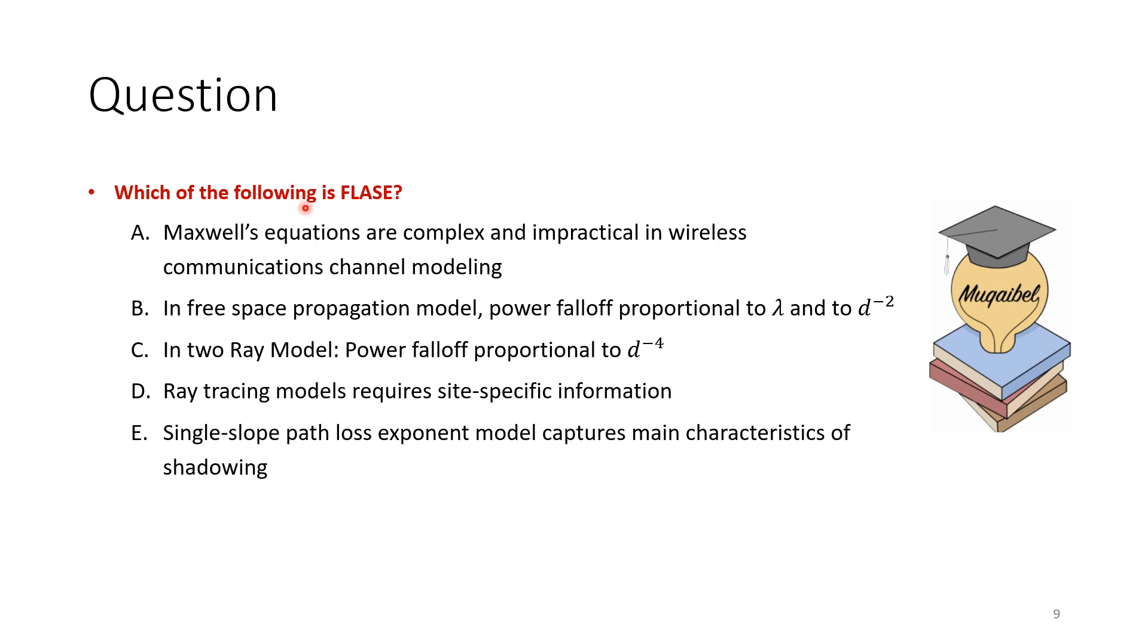Let's conclude with a question: Which of the following is false? Maxwell equations are complex and impractical for wireless communication channel modeling. Free space propagation model: power proportional to lambda and to the square of distance in the denominator. Two-ray model: power proportional to the fourth power of d. Ray tracing models require site-specific information. Single-slope path loss exponent model captures main characteristics of shadowing. Which one is false? Write your answer in the comment section.